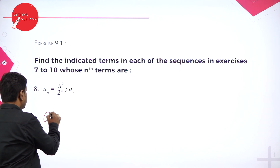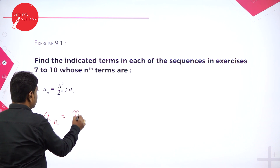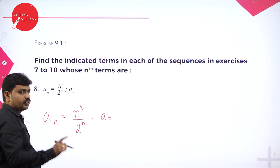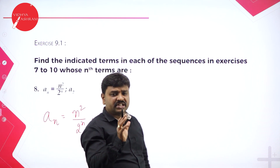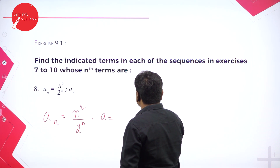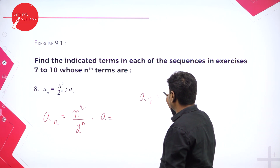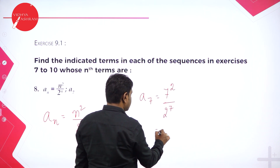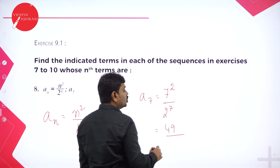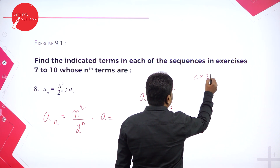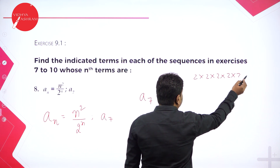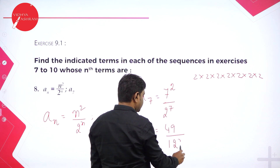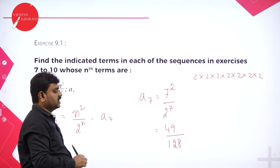Then Aₙ is given as N squared divided by 2 to the power N. They want you to find A7. A7 means: in the place of N, put 7. So A7 equals 7 squared by 2 to the power 7. That is 49 over 128. Now, 2 power 7 means multiply 2 seven times: 2, 4, 8, 16, 32, 64, 128. So the denominator is 128, and the answer is 49/128. It is not further divisible.